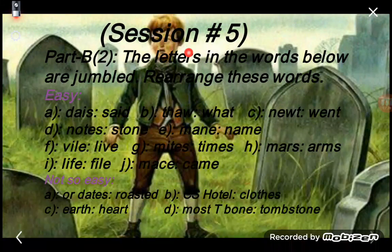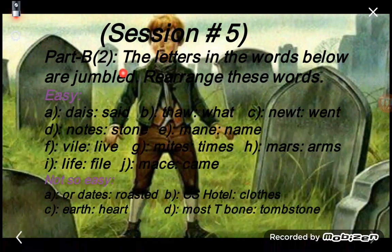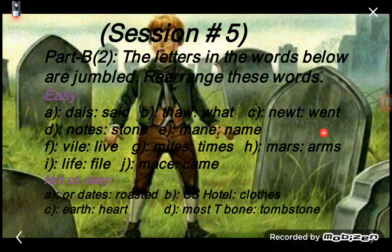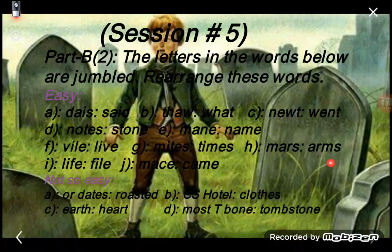Session 5: The letters of these words are jumbled, so you have to rearrange them and rewrite on your notebook neatly. Easy words: said, what, went, tone, name, live, times, arms, file, came. Not-so-easy words: roasted, clothes, hurt, tombstone.